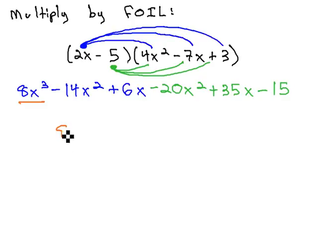We have 8x cubed. There's a negative 14x squared and a negative 20x squared, which are like terms, giving us negative 34x squared. Next, we see plus 6x and plus 35x, which gives us plus 41x.